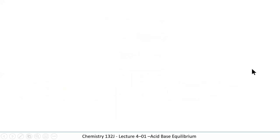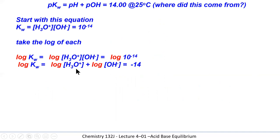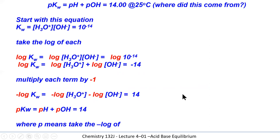Where does pH + pOH = 14 come from? Starting with the Kw equation, taking the log of each term gives log[H₃O⁺] + log[OH⁻] = −14. Multiplying each term by −1 gives: −log[H₃O⁺] + (−log[OH⁻]) = 14. Since p means 'take the minus log,' this becomes pH + pOH = pKw. At 25°C, pKw = 14, so pH + pOH = 14. This is temperature-dependent.